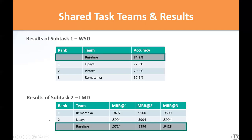The results for the submitted models for the WSD subtask show that the highest accuracy achieved was 77.8%. However, none of the participants surpassed our baseline, which had an accuracy of about 84.20%. This suggests that generative models, particularly in zero-shot settings, still fall short compared to encoder-based models fine-tuned on high-quality datasets.